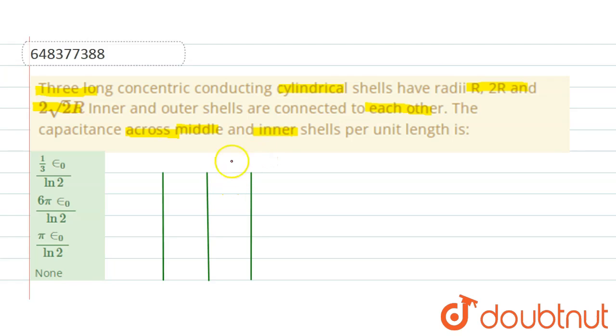Now let us consider, these lines are equivalent to the cylindrical shells, right? And this is of radius r, this is 2r and this is 2√2r.